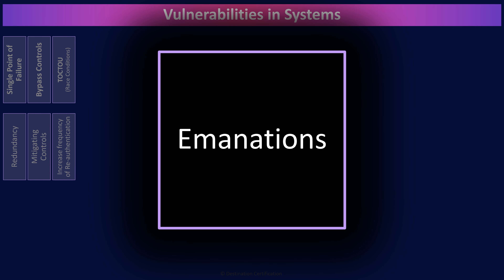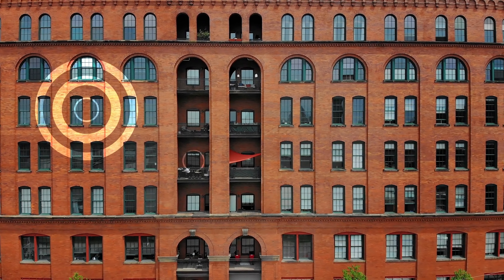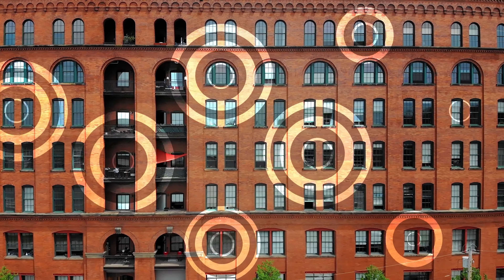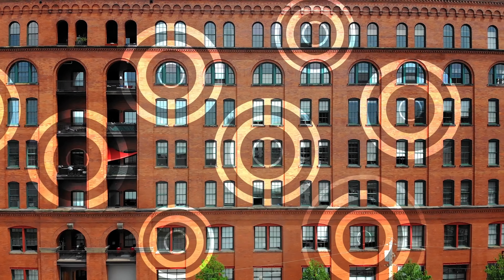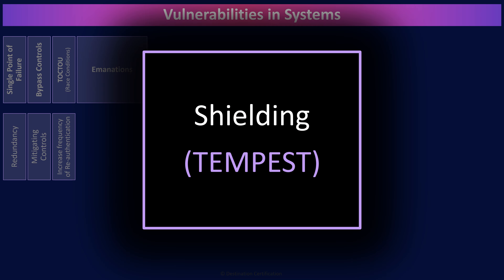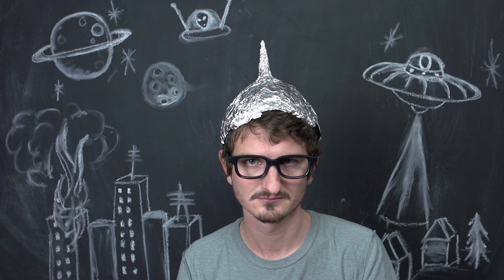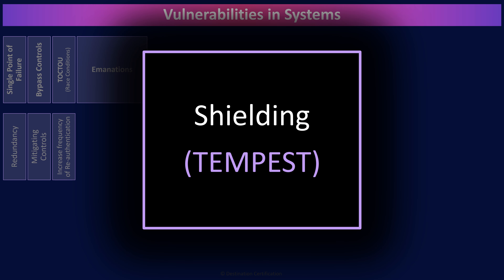Emanations are any sort of radio waves, electrical signals, lights, sounds, vibrations, etc. that radiate from a system and can be intercepted to eavesdrop on the system, thus allowing the leakage of information. Emanations are a vulnerability that needs to be addressed, and there are three major methods to do so. Shielding is various methods to block emanations from a system so they cannot be detected. You can block electromagnetic fields with Faraday cages, sound with insulation, light with opaque walls. A type of shielding developed by the military is known as TEMPEST, and it is specifically designed to shield devices that emit electromagnetic radiation. Just remember: TEMPEST is a method of shielding.